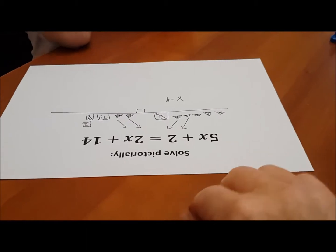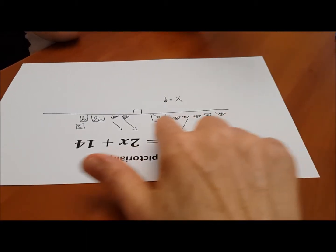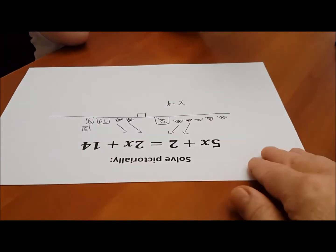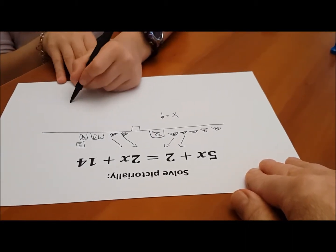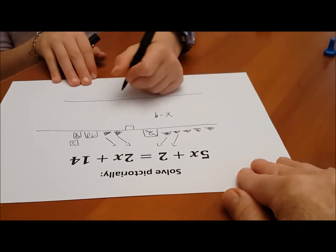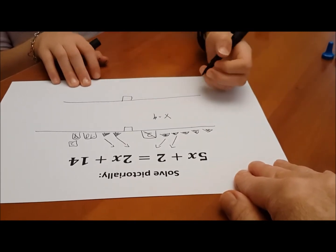Now we need to do the check. So we can either do the check here, if it's clear, or you could draw the picture again. Which do you want to do? Draw the picture. Draw it again? That's fine. I'm going to do it again and see if x equals 4 works.